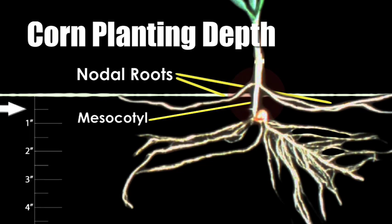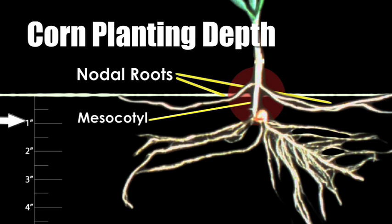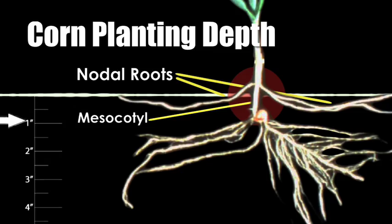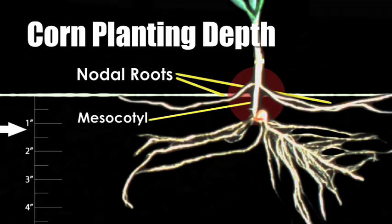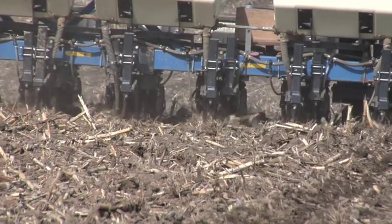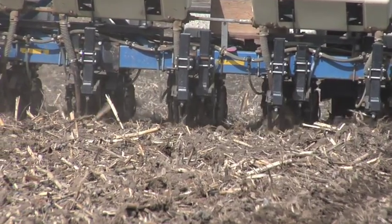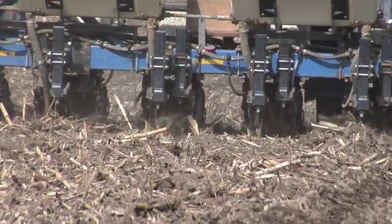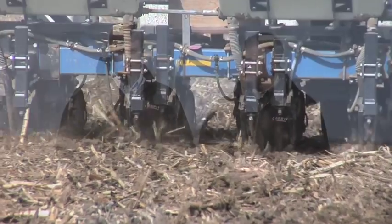So what happens is, if you plant your corn at, say, an inch deep, you're going to end up with some of those rings of nodal roots above ground — and that's not good. When they're above ground, they can't brace your plant as well, they can't bring in as much water, they can't bring in as many nutrients. If you plant your corn at less than an inch and a half deep, you have absolutely hurt your corn yield — there's no question about it.